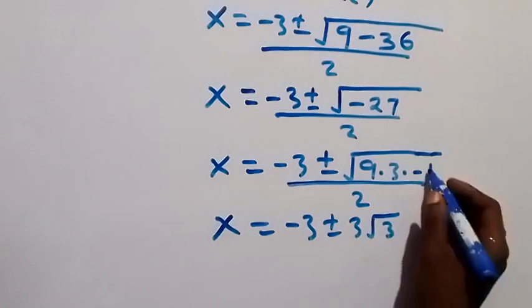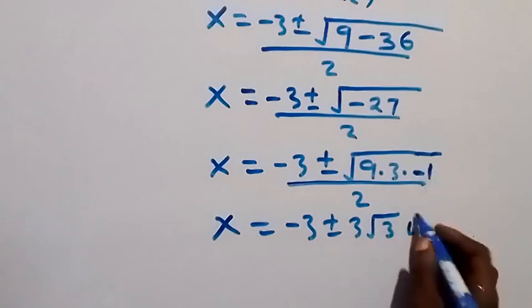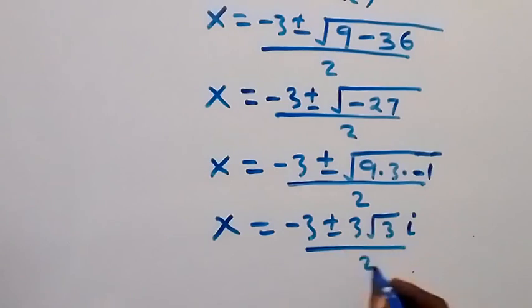then √(-1) here is the same thing as i, over 2.